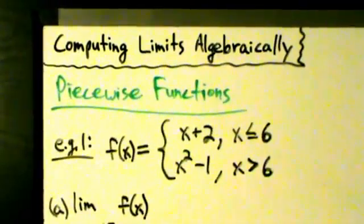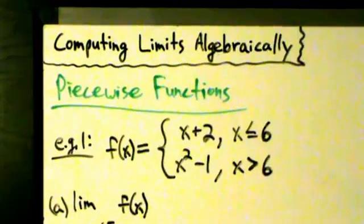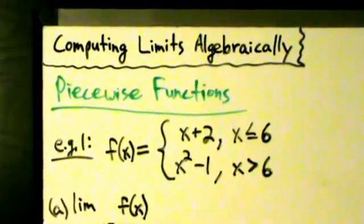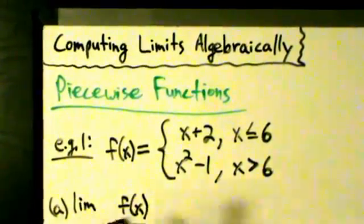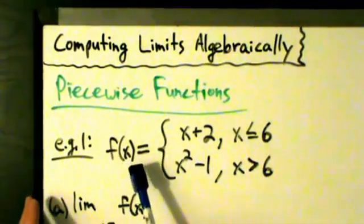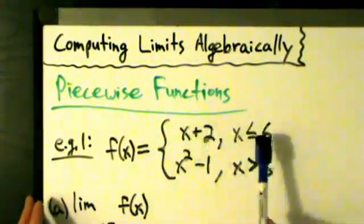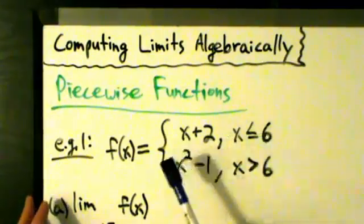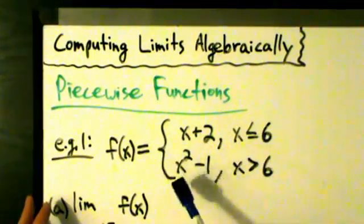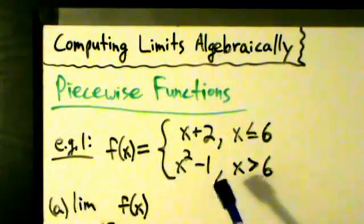Hey guys, let's go ahead and talk about computing limits algebraically with piecewise functions. A piecewise function is just a function that's literally defined in pieces. So f(x) here is equal to x plus 2 if x is less than or equal to 6, and it's equal to x squared minus 1 if x is bigger than 6.